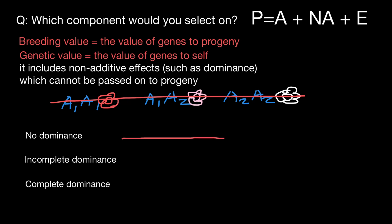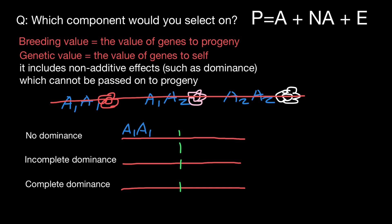Each line here represents the relationship between genotype and phenotype. Somewhere in the middle is the intermediate phenotype, and the two ends are the extremes. In the no dominance model, we have genotype A1A1 at one extreme, A2A2 at the other extreme, and genotype A1A2 in between — meaning the heterozygous genotype has an intermediate phenotype between the two extreme phenotypes.